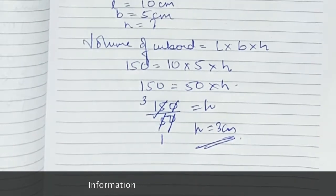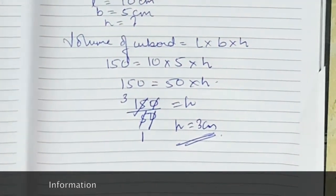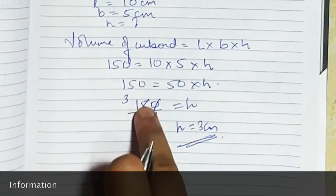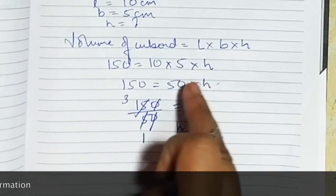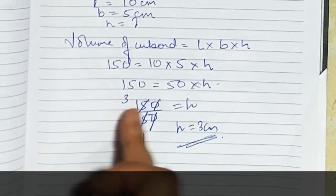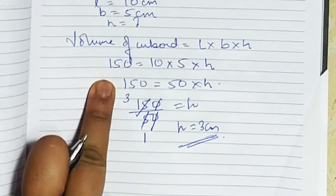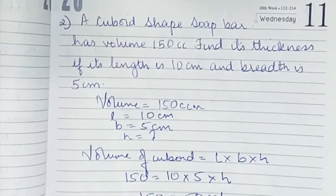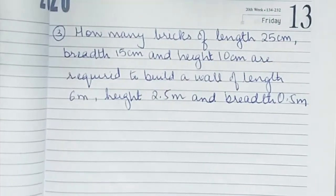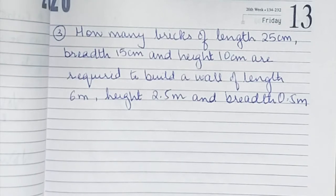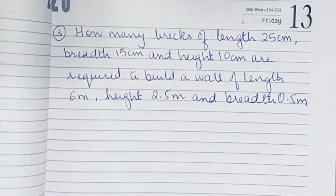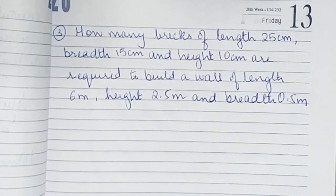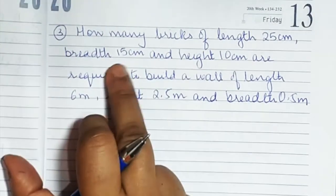The height is 3 centimeters. We used the same formula — substitute the values, keep the missing value on one side, and divide. So the answer is 3 centimeters. Now the third one: how many bricks of length 25 cm, breadth 15 cm, and height 10 cm are required to build a wall of length 6 meters, height 2.5 meters, and breadth 0.5 meters?